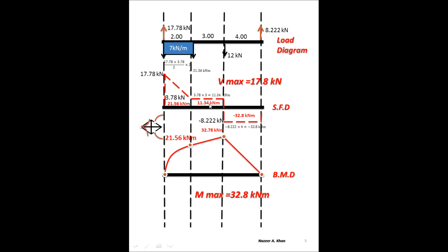From 21.56 kNm, I rise again by 11.34 kNm, giving a total of 32.78 kNm. From that point, I have a negative moment of minus 32.88 kNm — exactly matching the positive total — so I return to zero. Because it's a rectangle on the shear force diagram, I go in a straight line back to zero. I can now feel confident that all the previous work is correct — everything checks out.